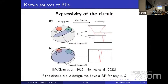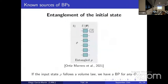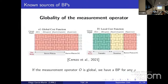Some known sources of barren plateaus: the expressivity of the circuit can cause a barren plateau — if your circuit is a 2-design over the unitary group, we will have a barren plateau for any ρ and any O. Moreover, if your initial state is very entangled and follows a volume law, we will also have a barren plateau. Finally, the globality of the measurement operator can induce barren plateaus. In 1D brickwork circuits where each two-qubit gate is a 2-design, a global observable acting on all qubits always causes a barren plateau at any depth, whereas a local observable only acting on a fixed number of qubits avoids barren plateaus up to log depth.